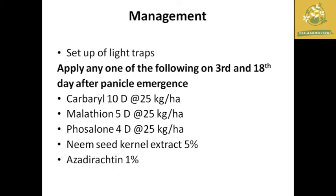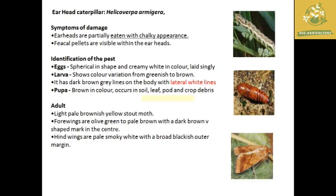Next is the earhead caterpillar, whose scientific name is Helicoverpa armigera. The major damage symptom is partially eaten ear heads with a chalky appearance, with fecal pellets visible near the ear heads. Eggs are spherical and white creamy in color, laid singly. Larvae show color variation from green to brown. The pupa is brown and pupates in soil, leaf parts, and crop debris.